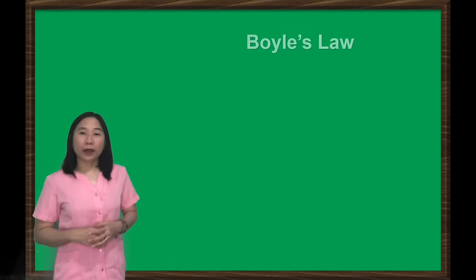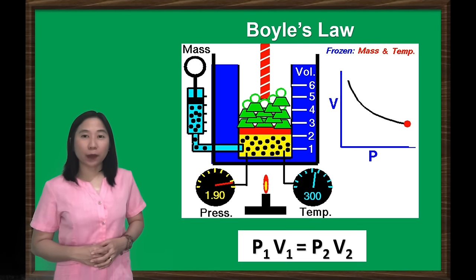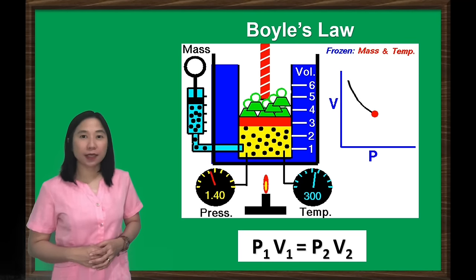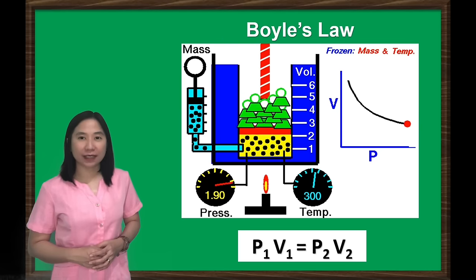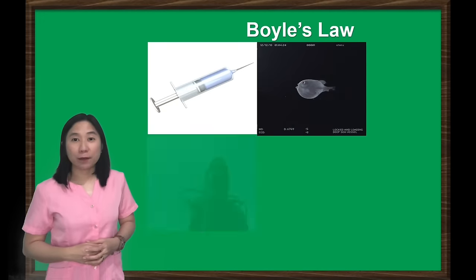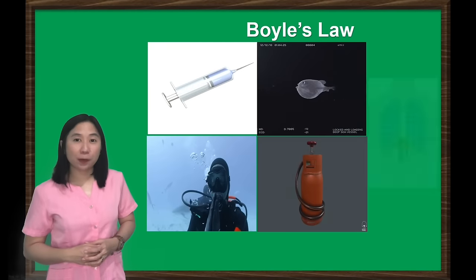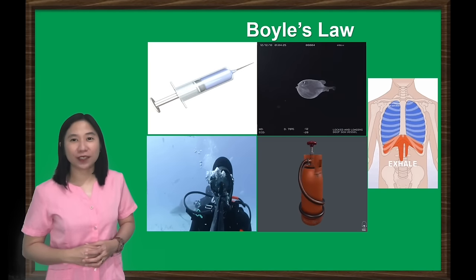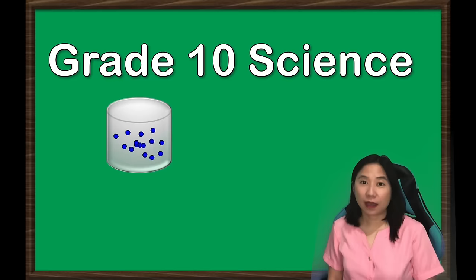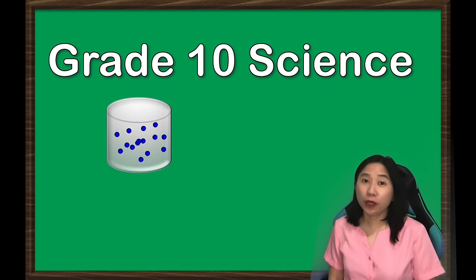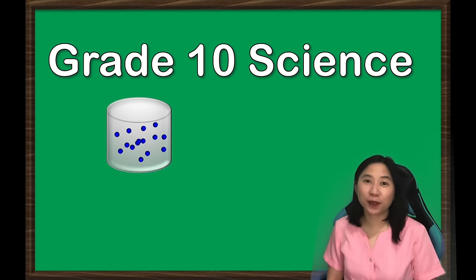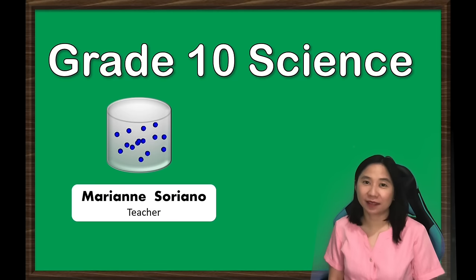Boyle's Law is an ideal gas law that describes the relationship between pressure and volume at a constant temperature and fixed amount of gas. Because of Boyle's Law, we can better understand the behavior of gases at different conditions. I hope you learned and enjoyed our lesson. This is Mam Marian Soriano. See you in the next lesson.